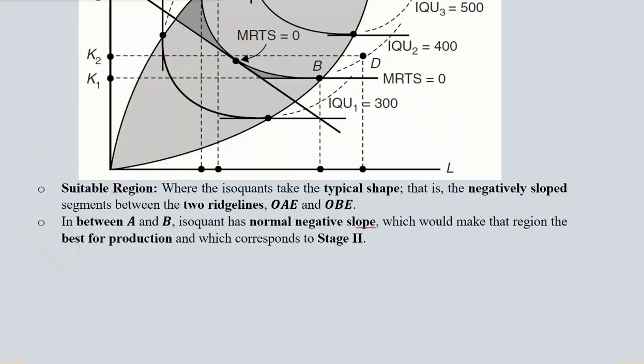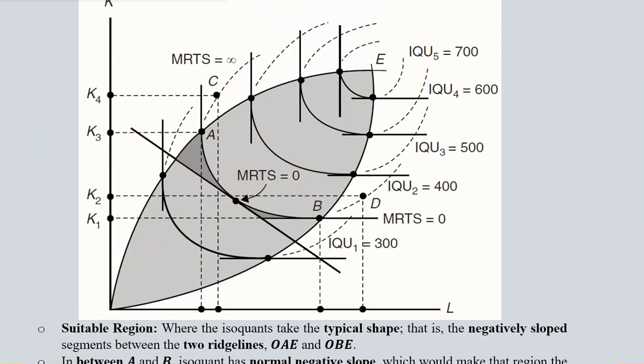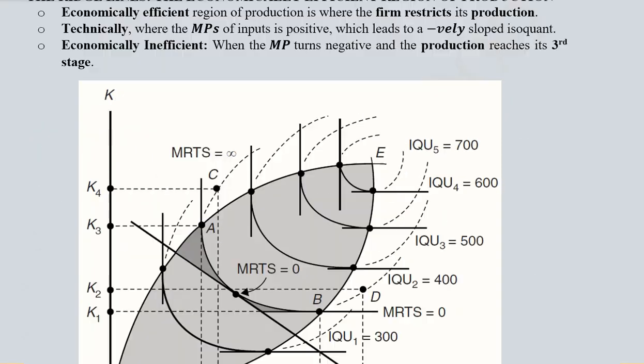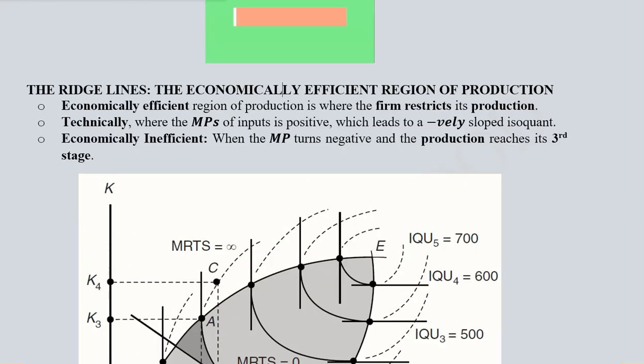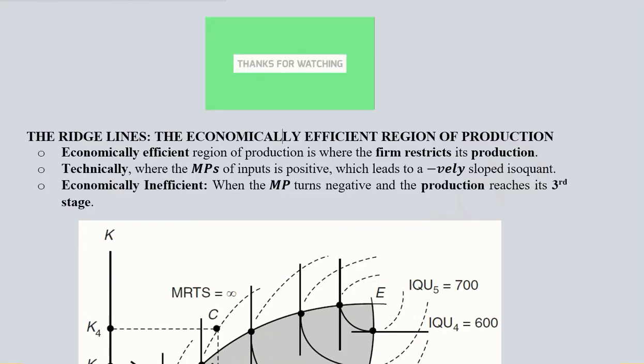Both of these showed the beginning of the unsuitable areas of the isoquant. So this is how the ridge lines can help us to understand the economically efficient and economically inefficient areas of the isoquants. Thank you.